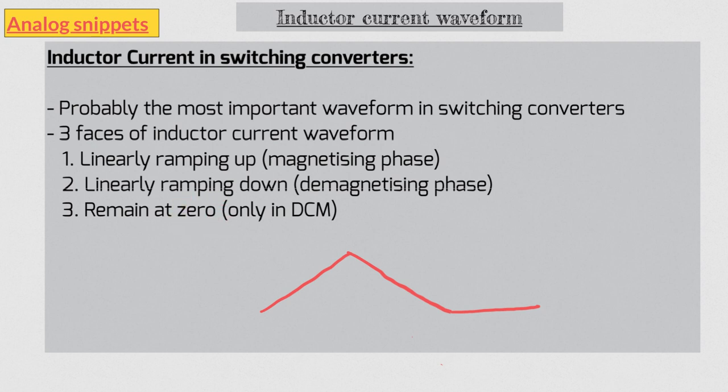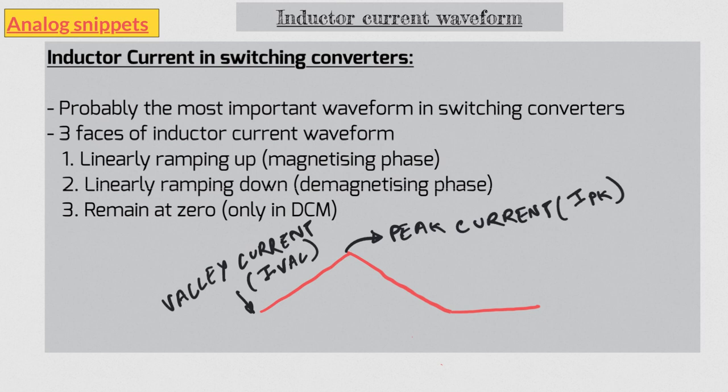The maximum value of the inductor current waveform is known as peak current. The minimum value is known as valley current, and the difference of the two is known as ripple current. Inductor ripple current is an important parameter in switching converter design. The midpoint between the peak and valley is known as center of ramp, or COR.